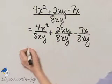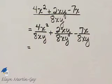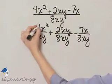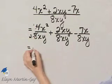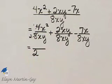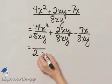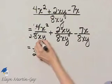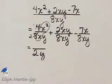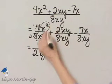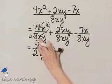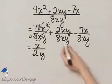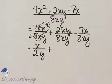And now let's just simplify. Notice 4 and 8 have a common factor of 4. 4 divided by 4 is 1, and 8 divided by 4 is 2, so I have a 2 in the denominator. Notice I have a y in the denominator. Then let's look at the x's: I have x squared in the numerator and x — or x to an understood power of 1 — in the denominator. That's x raised to a power of 2 minus 1, or x to the 1, which I can simply write as x. So that's the first term simplified.